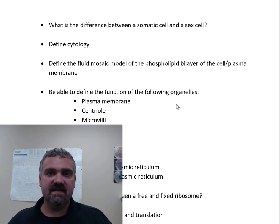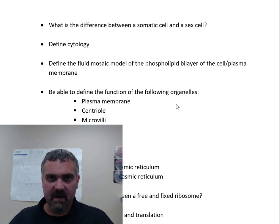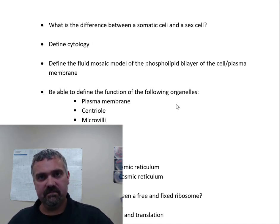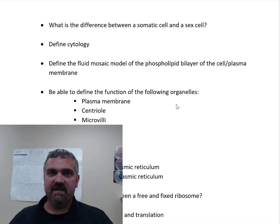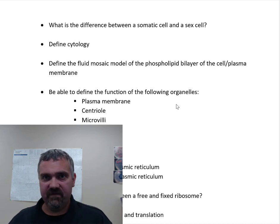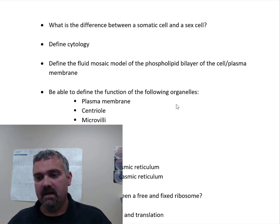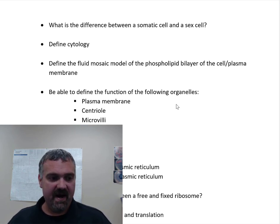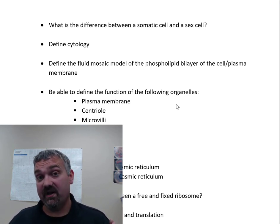What is the difference between a somatic cell and a sex cell? Somatic means body, so a somatic cell is going to be your body cells, and sex cells will be your gametes. Every cell in my body is a somatic cell except for the male sex cells — the sperm. Every cell in a woman's body is a somatic cell except for the female gametes — the egg. Somatic cells are diploid, meaning they have two sets of chromosomes. My body cells have 23 pairs of chromosomes.